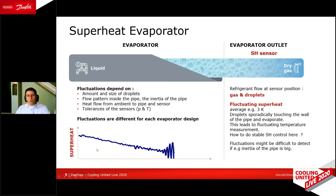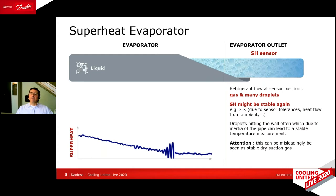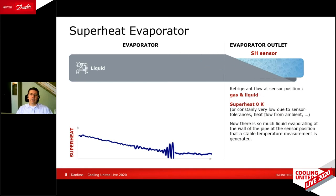But just to show what can happen, let's reduce even further. Many more droplets come out of the evaporator, and all of a sudden the superheat measurement can look like it is stable again. But now it is stable wet gas leaving the evaporator, which is not good — it is misleading. Many droplets are coming out, and this stable measurement can come from sensor tolerances because we actually have zero superheat. If we reduce even further, thinking we are on a stable dry superheat, we get a really large amount of liquid out of the evaporator, and that needs to be avoided.